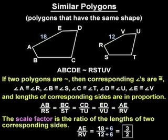which means that all pairs of corresponding sides will be in the ratio 3 to 2.